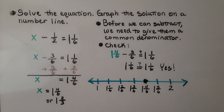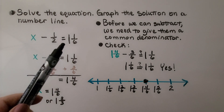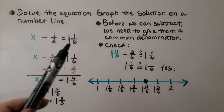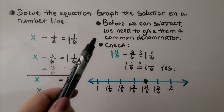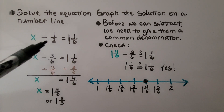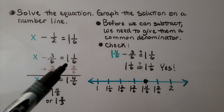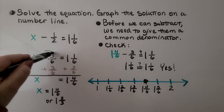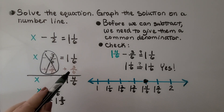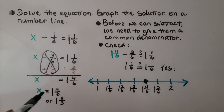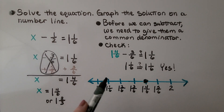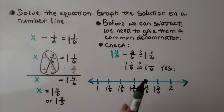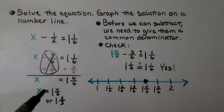We solve the equation and graph the solution on a number line. We have x minus 1 half is equal to 1 and 1 sixth. When subtracting or adding fractions, they need a common denominator. Since 2 and 6 can meet at 6, 1 half is equal to 3 sixths. Now we have x minus 3 sixths is equal to 1 and 1 sixth. We add 3 sixths to both sides, which eliminates the minus 3 sixths. Adding 3 sixths to the other side gives us 1 and 4 sixths, so x equals 1 and 4 sixths. We plot that on a number line, and we can actually simplify this to 1 and 2 thirds.